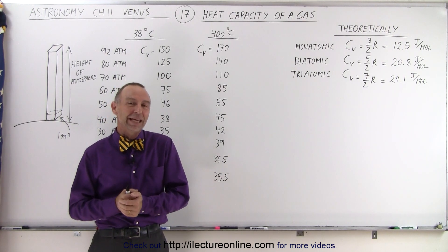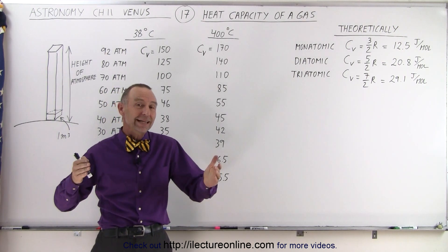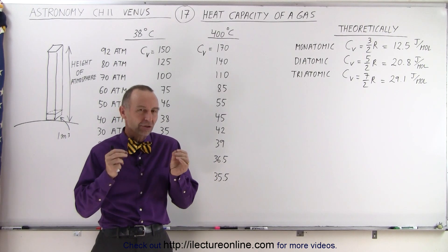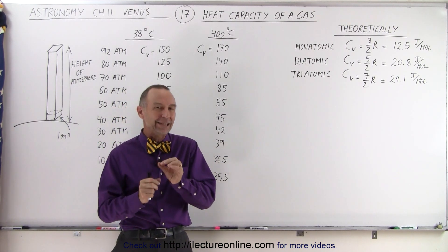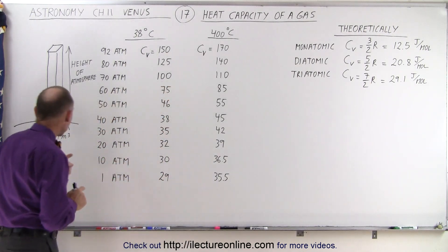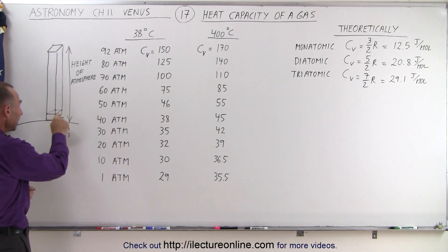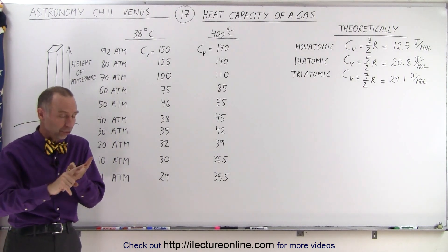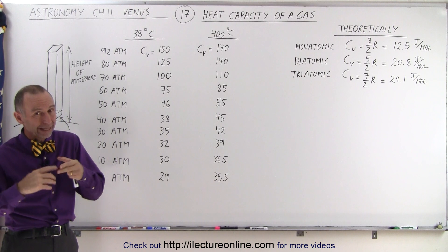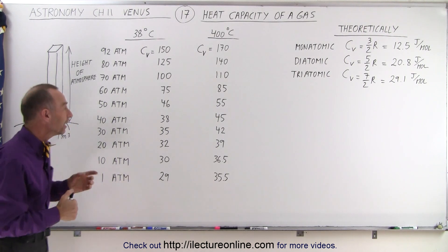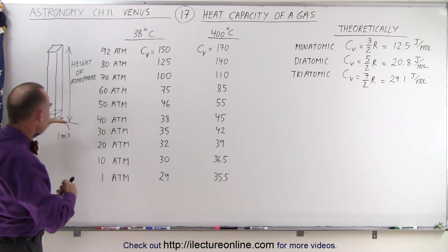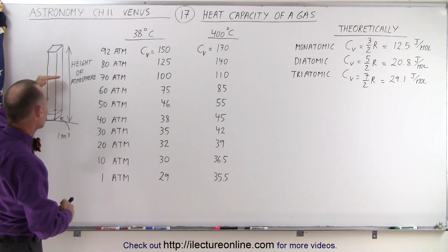Welcome to ElectronLine. In order to calculate the total heat content in the atmosphere of Venus, we need to understand a few more things. In the previous video, we were able to calculate the heat content in one cubic meter of atmosphere on the surface of Venus, but there we know the pressure, we know the temperature, and we know the heat capacity of the atmosphere at that location. But of course, that changes as you go higher up in the atmosphere.